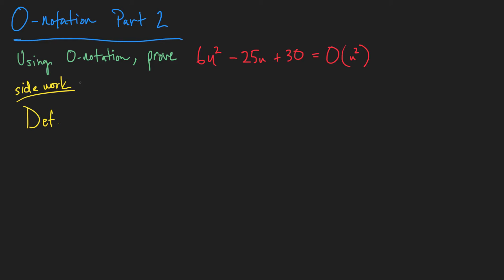Let's use the definition and plug into the definition of Big O notation. We have 6n² - 25n + 30, and that's supposed to be less than or equal to some constant A times n², our g(n), for all n greater than or equal to some positive constant B.